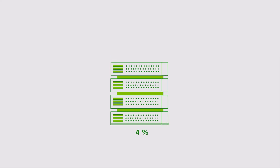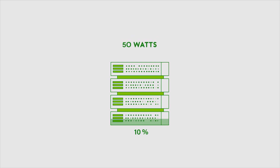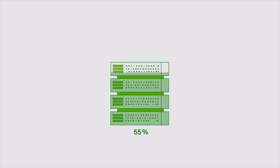For example, a server running at about 10% utilization might already be consuming 50 watts, whereas the same server running at 90% utilization might only consume another 50 watts — so 100 watts total.